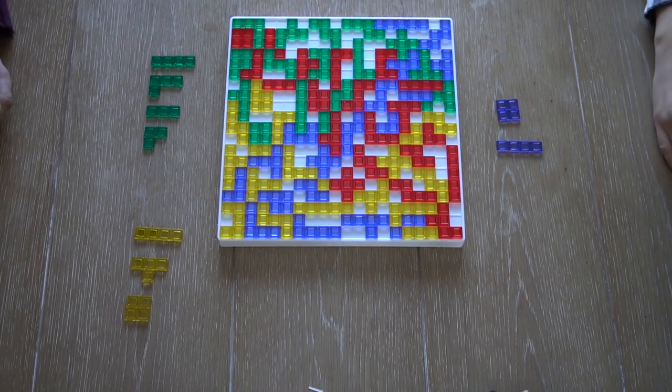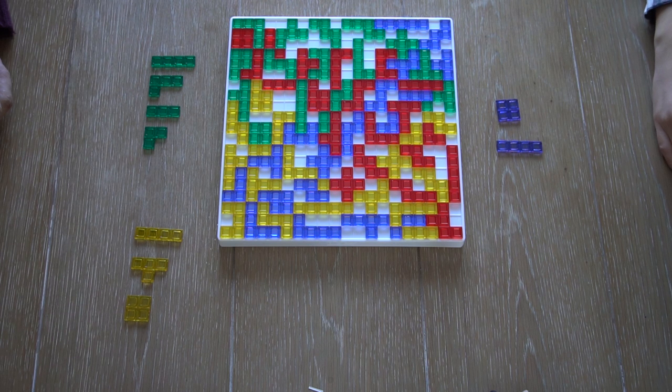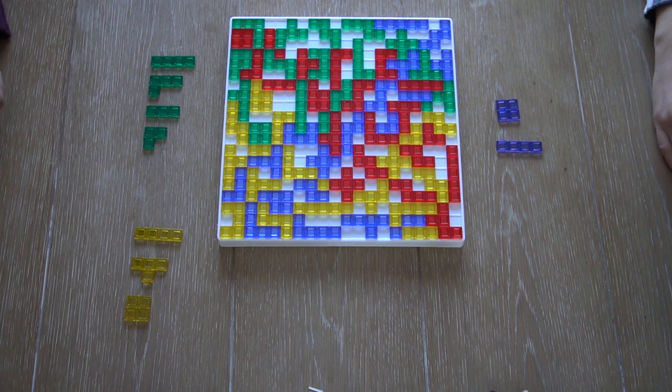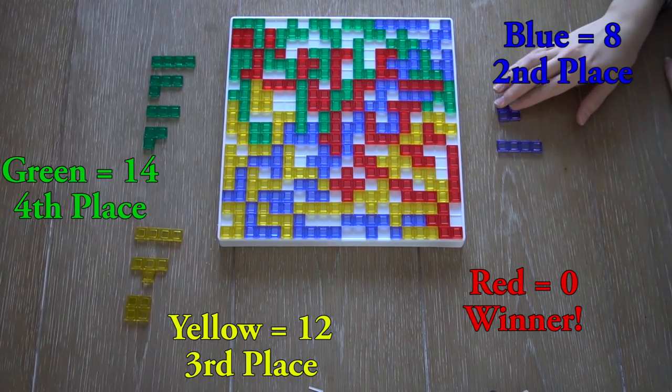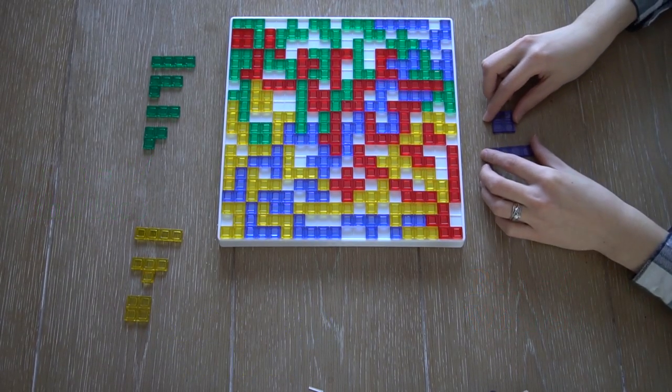The game ends when every player has run out of possible moves, or laid out all their pieces. The players that have pieces remaining then count all the squares in their pieces to get their final score.